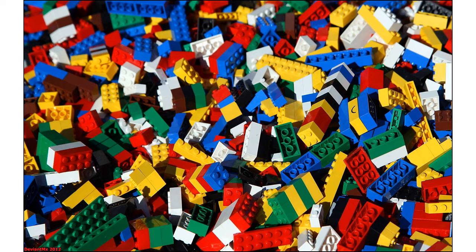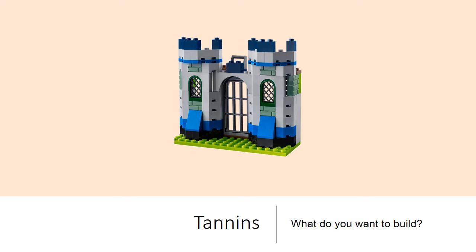The way I like to think of tannins is they're just a bunch of Legos — a big pile of things you can use to build something. The question is, what do you want to build? Depending on the variety, you can build something totally different. Pinot Noir just doesn't have a lot of tannin — it's the nature of the beast. The aldehydes act like glue sticking the Legos together. If you get a lot of aldehyde in a Pinot, you've got nothing there to bind it up, so Pinots are not really ideal candidates for micro-oxygenation.